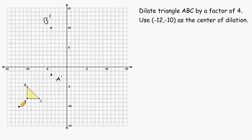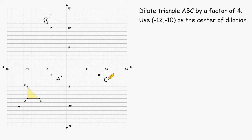For point C, we would have to move 5 in the x direction and 2 in the y direction. So let's move over 5 and up 2, repeating that process a total of four times — over 5 up 2, over 5 up 2, over 5 up 2, over 5 up 2. And this will be the new location of point C. After determining the new locations of the three points of triangle ABC, you can connect those points together to form your dilated triangle.